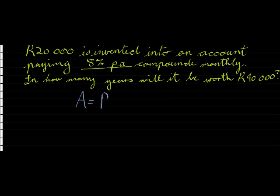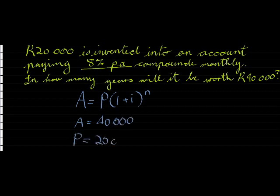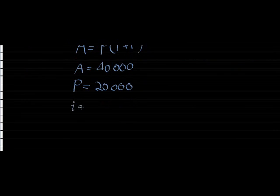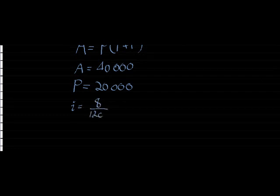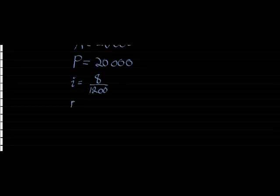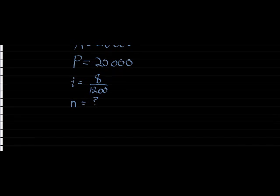It's simply the compound growth formula, where the future value equals R40,000 and the present value equals R20,000. Since interest is compounded monthly, I use a monthly interest rate of 8% divided by 12, which is 8 divided by 1200. And n represents how many times I will earn interest — that's what I want to find out: how many times will I earn interest before the investment reaches R40,000.